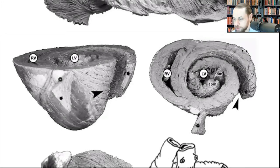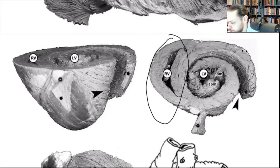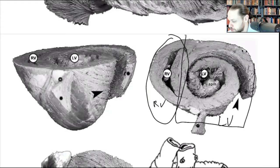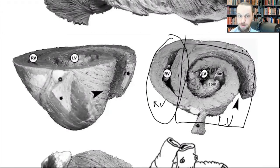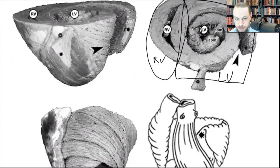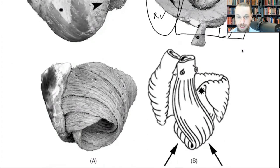You can see the right ventricle (RV) and left ventricle (LV), and notice the size difference — the left ventricular wall is much thicker than the right ventricular wall, which only pumps blood to the lungs. You can also see how the muscle layers are twisted on each other.